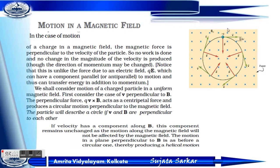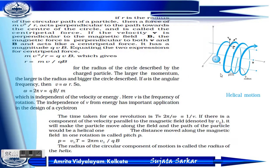If the velocity has components along B, these components remain unchanged — the motion along the magnetic field will not be affected. The plane perpendicular to B produces circular motion. Combined with the component along B, this produces a motion called helical motion.